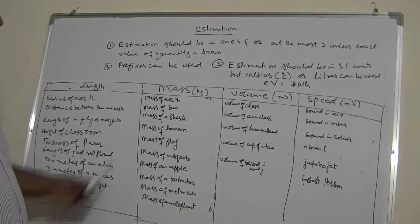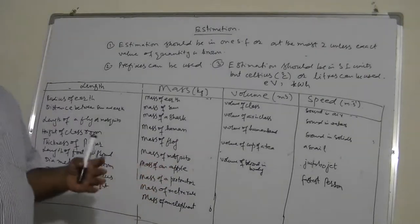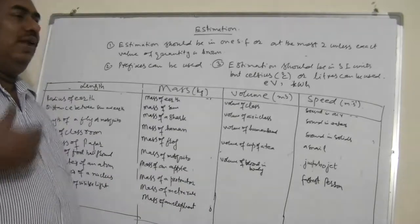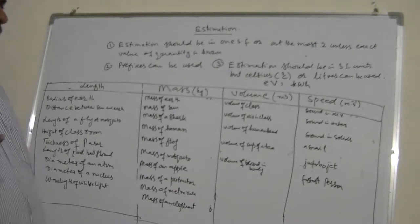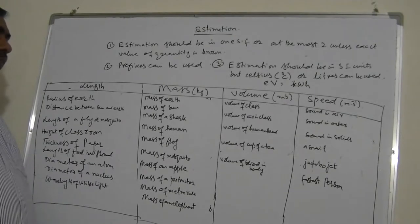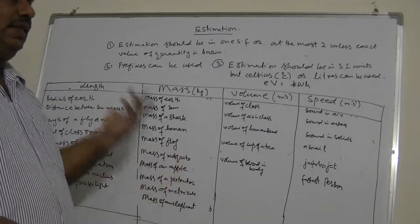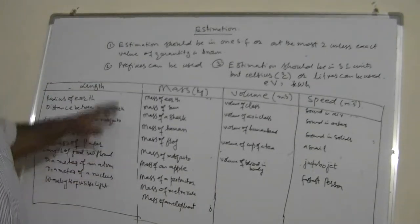For example, if the examiner asks you to estimate the number of days in a year and you know the exact value — 365.25 days — you can quote that. But if you want to estimate and don't know exactly, you can say 370 days, 360 days, or 400 days. That is acceptable as an estimation.